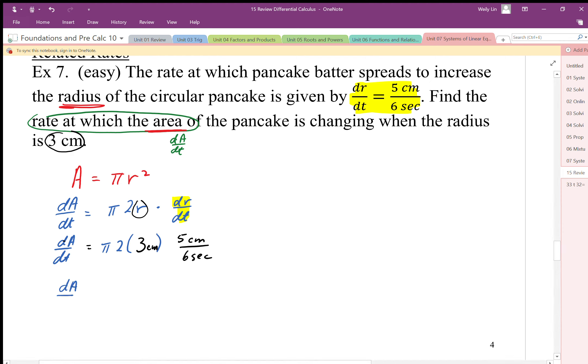dA/dt is equal to... that's going to be 6 divided by 6, so it's going to be 5π centimeters squared per second. So there's my dA/dt.